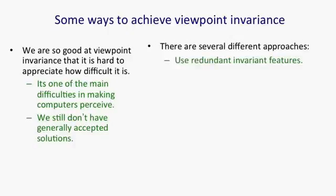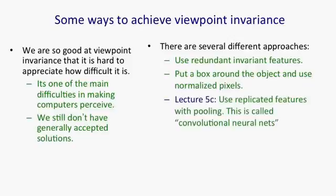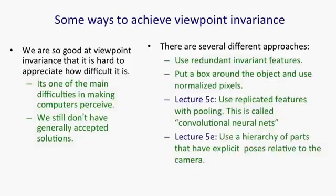The first approach is to use redundant invariant features. The second approach is to put a box around the object so that you can normalize the pixels. The third approach is to use replicated features and pool them. This is called convolutional neural nets, and I'll go over that in great detail. And the fourth approach, which I'll talk about at the end of the lecture, is to use a hierarchy of parts and to explicitly represent the poses of the parts relative to the camera or retina.